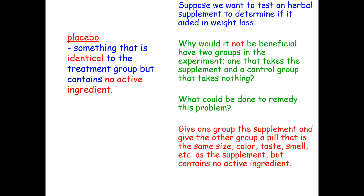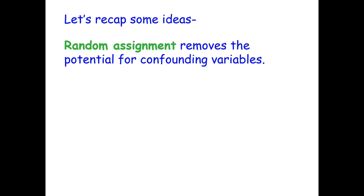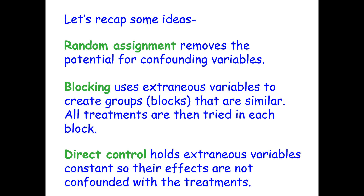Let's recap some major ideas. Random assignment removes the potential for confounding variables. Blocking uses extraneous variables to create similar groups, called blocks, and then all treatments are tried in each block. Direct control holds extraneous variables constant so their effects are not confounded with the treatments.